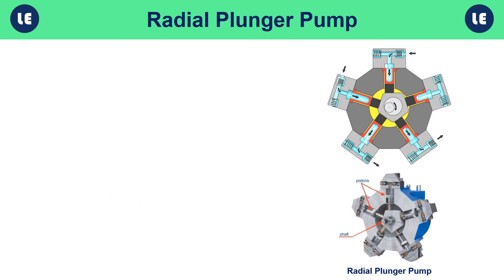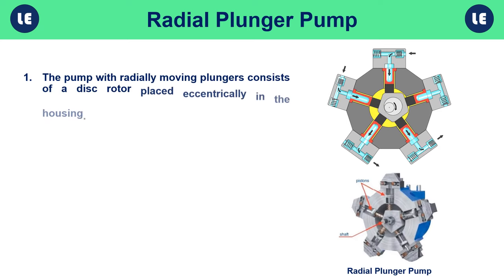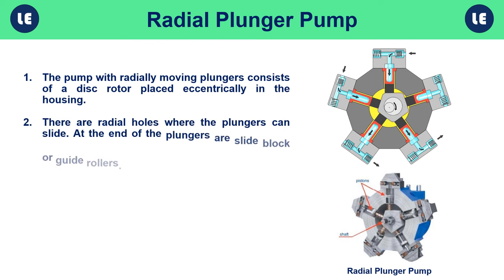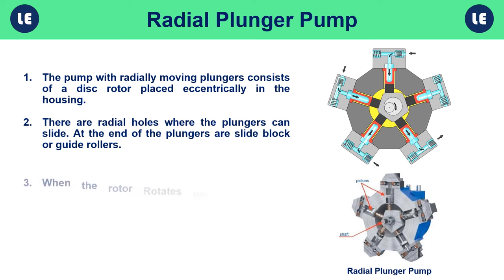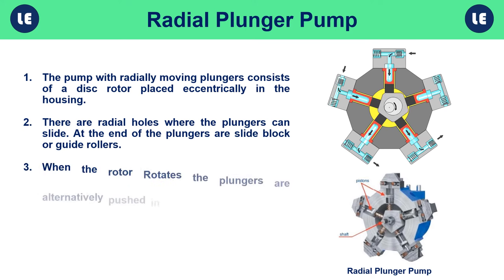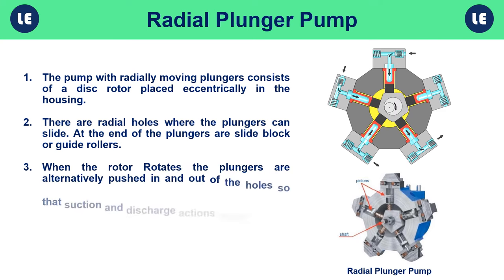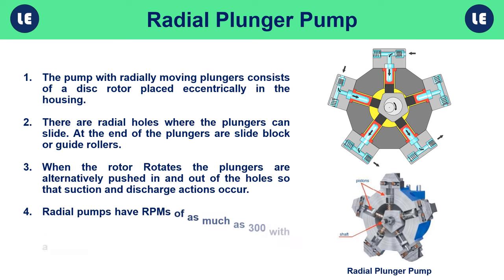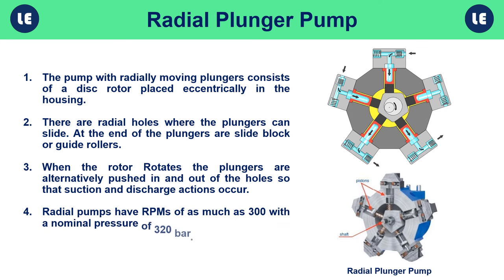The radial plunger pump consists of a disc rotor placed eccentrically in the housing. There are radial holes where the plungers can slide; at the end of the plungers are slide blocks or guide rollers. When the rotor rotates, the plungers are alternatively pushed in and out of the holes so that suction and discharge actions occur. Radial pumps have RPMs of up to 300 with a nominal pressure of 320 bar.